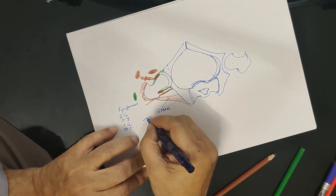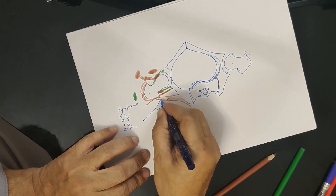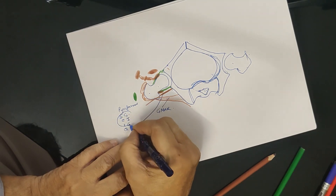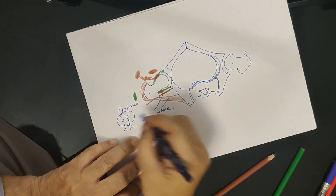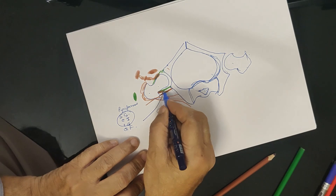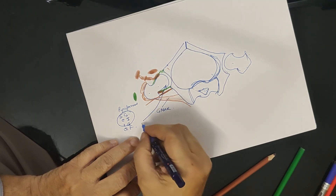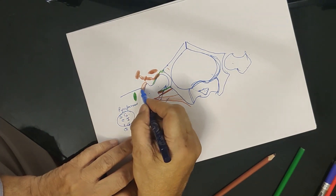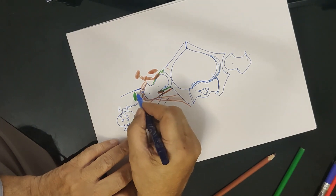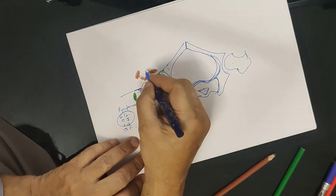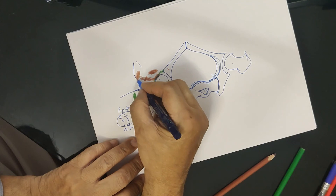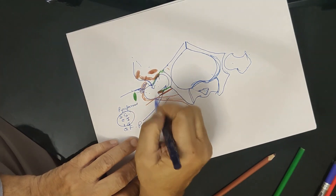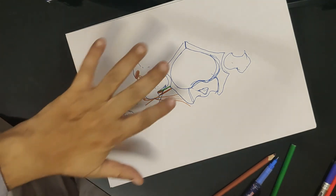This diagram tells you about the posterior approach: going through the gluteus maximus, then dealing with the triflagellate tendon — superior gemellus, obturator internus, inferior gemellus — then going through the capsule and obturator externus into the hip. The lateral approach goes anterior to the TFL, in front of the gluteus medius, splitting the gluteus medius. The anterior approach goes under the sartorius between the sartorius and the gluteus minimus. So there are three approaches to the hip that you can understand from this diagram.